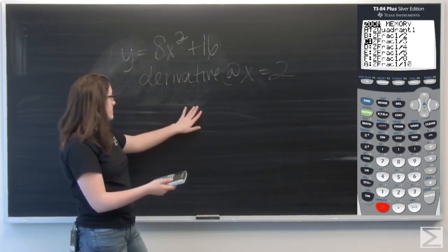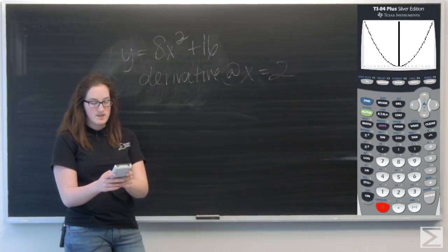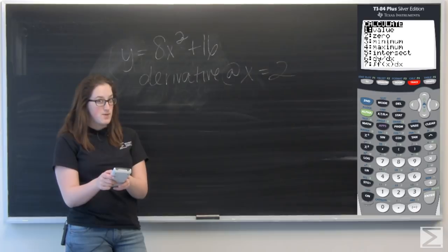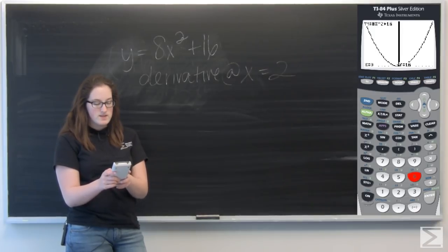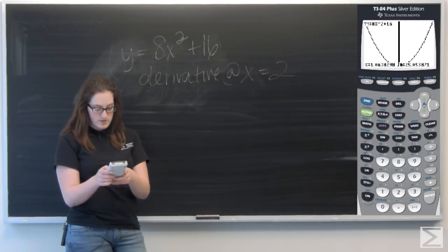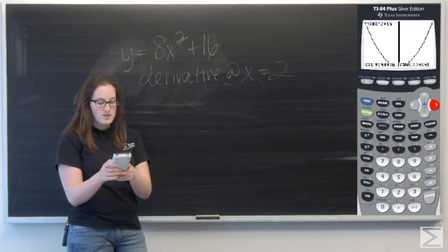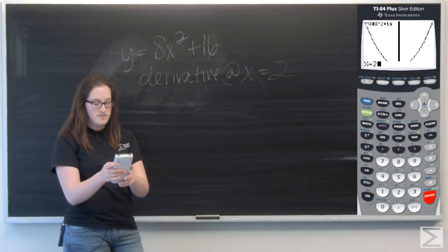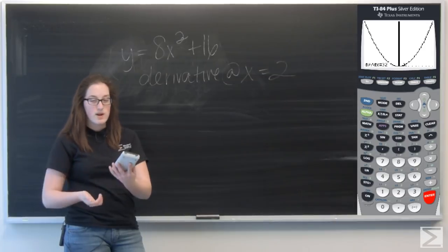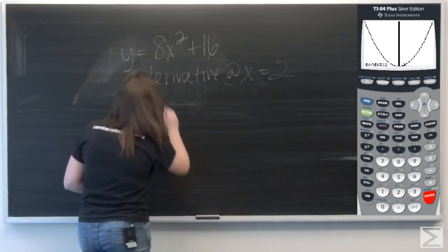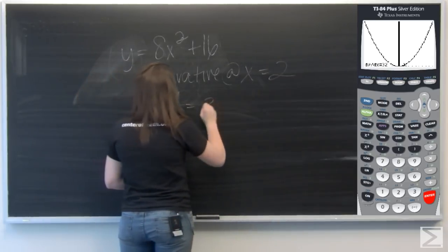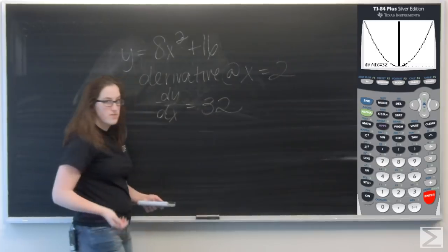So now I want to find the derivative at two. Go to second trace. That's calc. Scroll down. You should see number six, dy dx. And then select next point. I'm going to scroll over to x equals two. But I'm not actually going to. It's giving me weird decimals. I can always plug in two. So push two and hit enter. And it gives me dy dx equals 32.